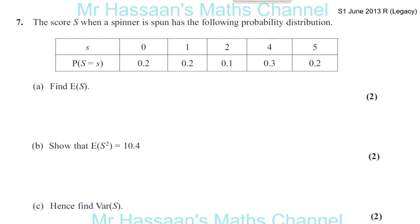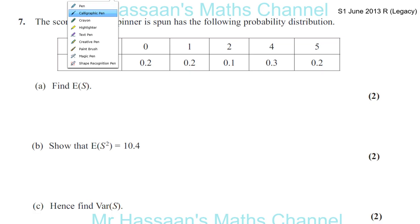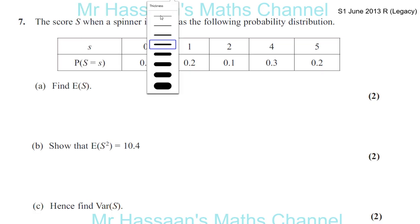Question number 7 from June 2013, the R replacement paper, legacy S1, Statistics 1. The first part of the question asks us to find E(S), which is the mean or the expected value of S, and that's pretty simple — to find the expected value, or the mean.